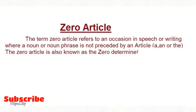So let us see what we are going to learn today. Today we will be discussing zero article. This term 'zero article' refers to an occasion in speech or writing where a noun or noun phrase is not preceded by an article — it can be 'a', 'an', or 'the'. The zero article is also known as the zero determiner.